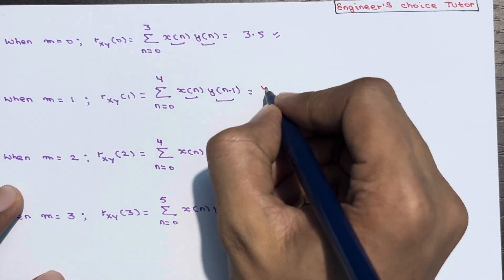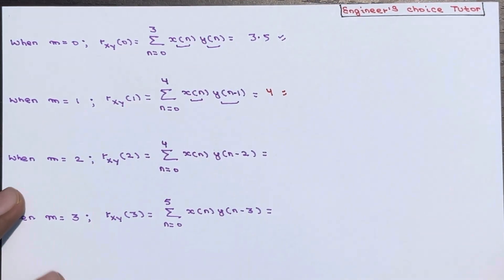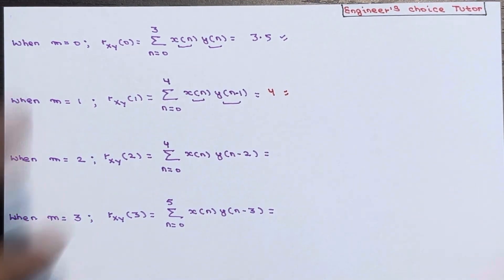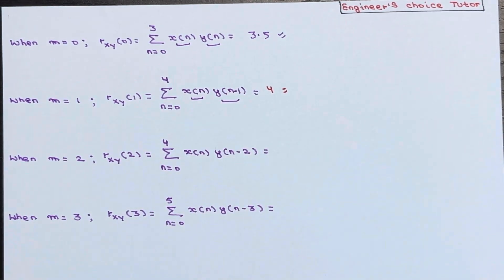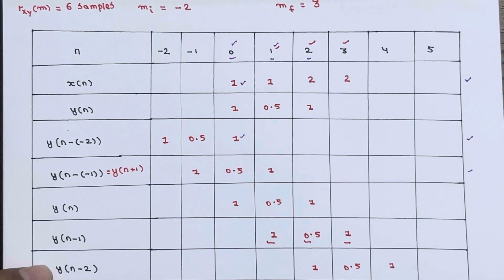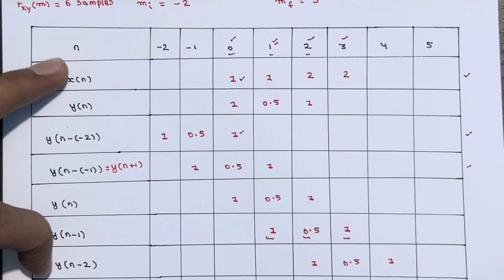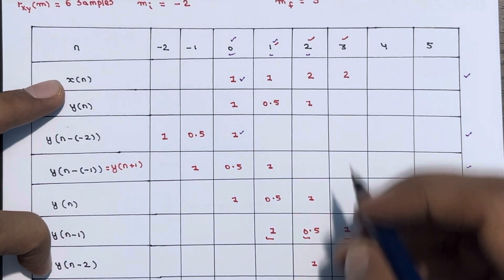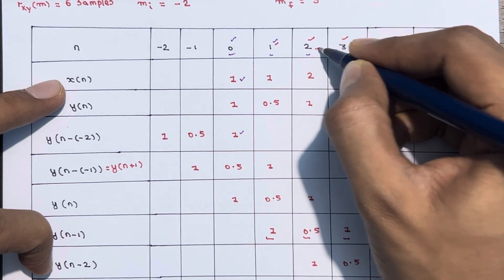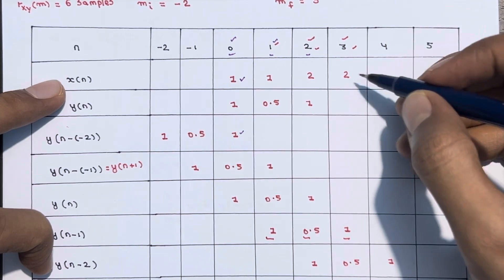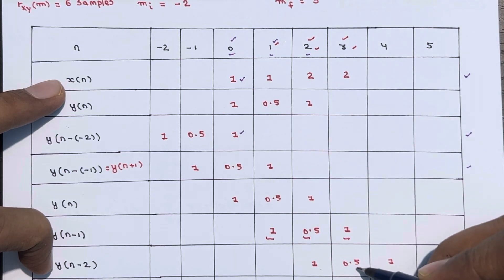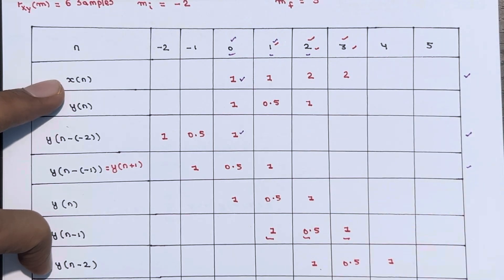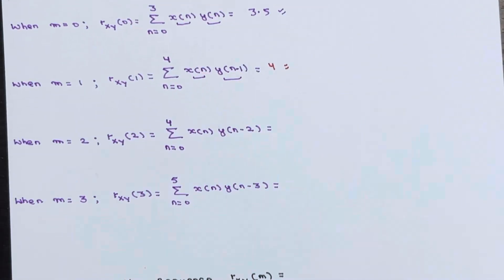When m = 2, we need x(n) times y(n-2). y(n-2) is in the table and the common points are at n = 2 and n = 3. So 2 times 1 is 2, plus 2 times 0.5 is 1. That gives 2 plus 1 equals 3. Therefore rxy(2) = 3.